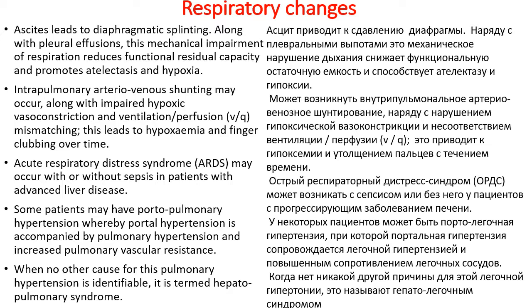Respiratory changes. Ascites leads to diaphragmatic splinting along with pleural effusion. This mechanically impairs respiration, reduces functional residual capacity, and promotes atelectasis and hypoxia. Intrapulmonary arteriovenous shunting may occur along with impaired hypoxic vasoconstriction and ventilation-perfusion (VQ) mismatching. This leads to hypoxemia and finger clubbing over time.